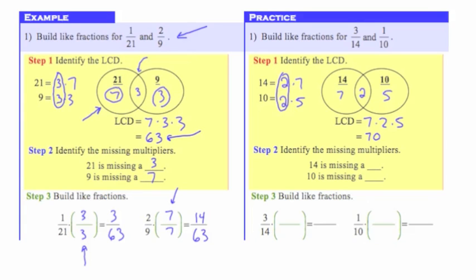Now let's talk about the missing multipliers. For 14, the only factor that 14 is missing out of this LCD is 5. So with a denominator of 14, our missing multiplier is going to be 5. The only factor 10 is missing is 7. So with a denominator of 10, our missing multiplier is going to be 7. Now we're going to plug these missing multipliers into our structure to build like fractions. For our denominator of 14, our missing multiplier was 5, so I'm multiplying by 5 over 5.